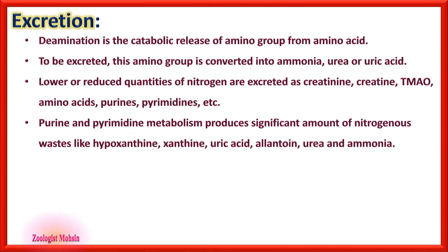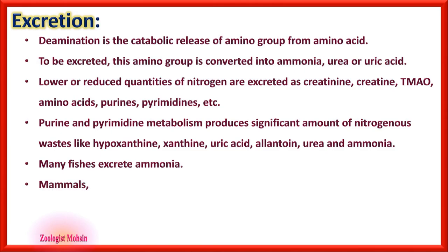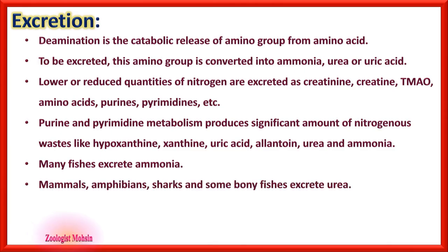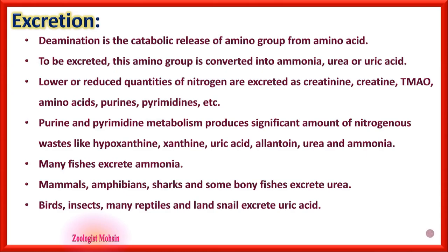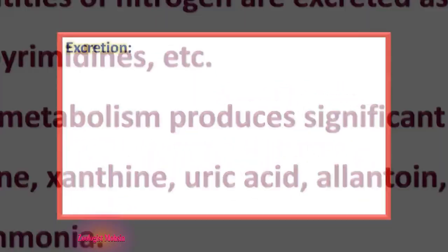Allantoin is an intermediate waste product that converts into others. Many fishes excrete ammonia; mammals, amphibians, sharks, and some bony fishes excrete urea; birds, insects, many reptiles, and land snails excrete uric acid — please remember that land snails also excrete uric acid.